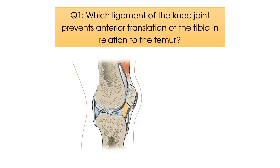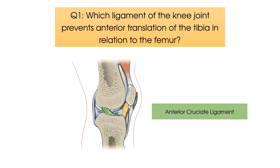The ligament in question is the anterior cruciate ligament. The biggest anatomical clue that demonstrates its function is the fact that this ligament attaches to the anterior intercondylar surface of the tibia. Remember the three anteriors: the anterior cruciate ligament prevents anterior translation of the tibia and attaches to the anterior intercondylar surface of the tibia.